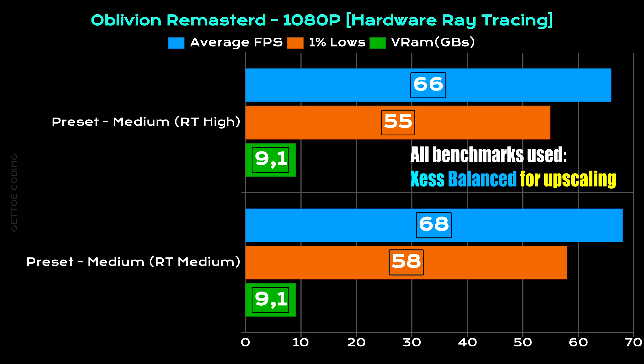At 1080p, comparing hardware ray tracing presets — high versus medium: for the medium graphical preset with ray tracing set to high, average FPS was 66, 1% lows at 55, and VRAM at 9.1 gigs. For the same medium graphical preset with ray tracing set to medium, average FPS came in at 68, 1% lows at 58, and VRAM stayed at 9.1 gigs. So not much of a difference between the different ray tracing presets here.